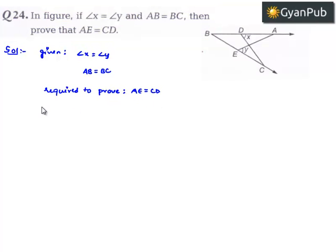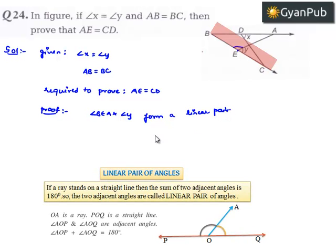Moving on to the proof. If we consider above BC at point E, angle BEA and angle y form a linear pair. Therefore, we know that the sum of angles that form a linear pair is equal to 180 degrees. So we can say angle BEA plus angle y is equal to 180 degrees. Let this be equation number 1.